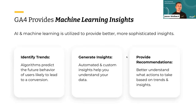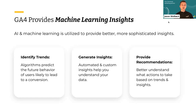The final piece of the why is machine learning. GA4 is really built with machine learning integrated throughout. What that allows it to do is provide better, more sophisticated insights and makes it easier for you to understand the results you're seeing within the platform. It does this in three different ways: it helps you identify trends, there are algorithms and what Google calls predictive metrics that can actually predict the future behavior of users likely to lead to a conversion. They have tools that can show you which types of users are most likely to make a purchase on your website, for example.